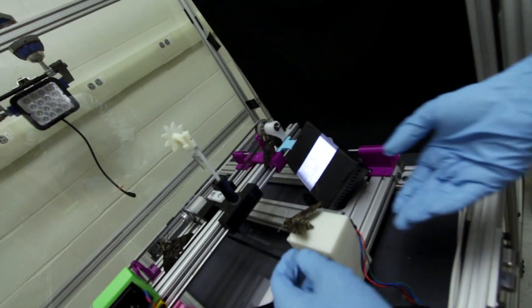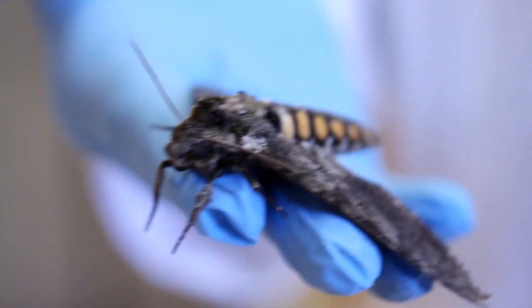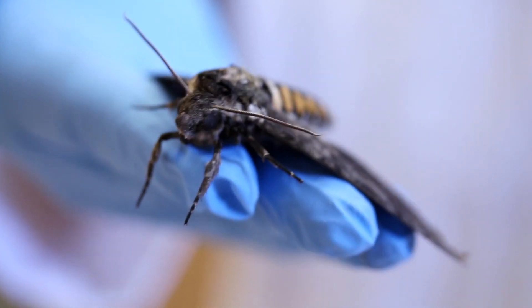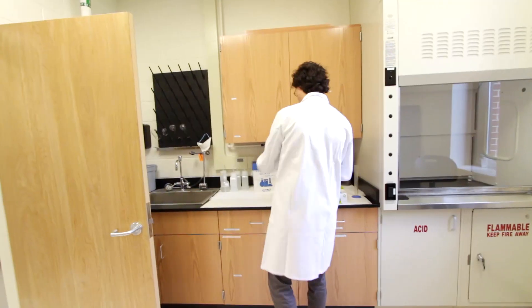I think one of the big challenges now is to figure out how the neural systems of animals and the mechanical systems of animals are working together in order to enable this really exquisite level of adaptation and behavior that we see in the natural world.